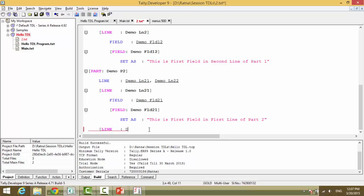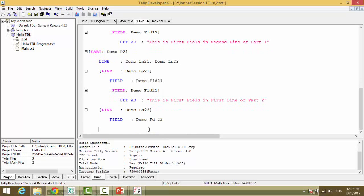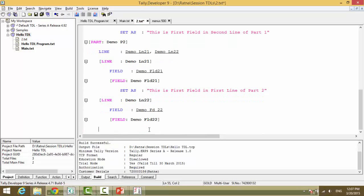Line demo LM22, demo FL D282, and set as. This is first field in second line of part two.